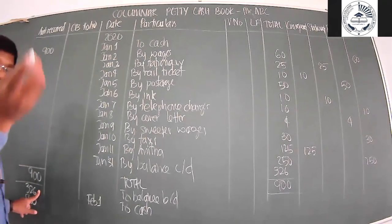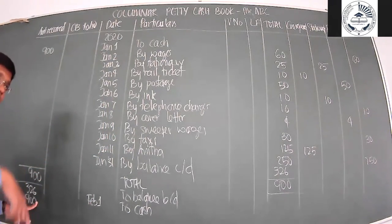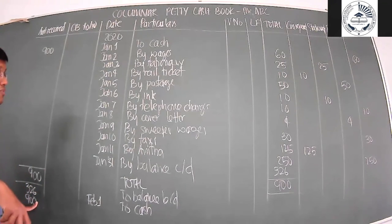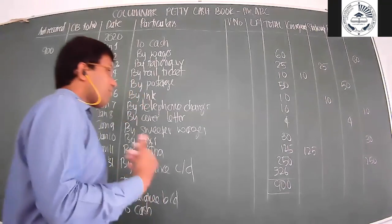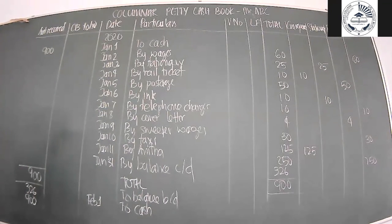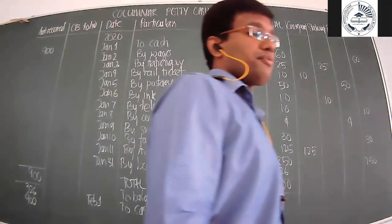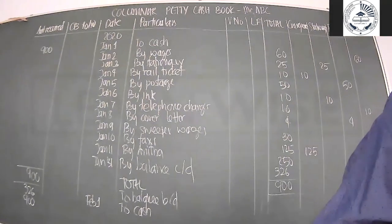The 326 is your previous month's balance and 900 is the current month's amount received from the main cashier. In fixed advance system, irrespective of the transactions you carried out, you will be receiving a fixed amount of money from the main cashier every month. This is what makes fixed advance system unique - the petty cashier always receives the same fixed amount regardless of expenditure.